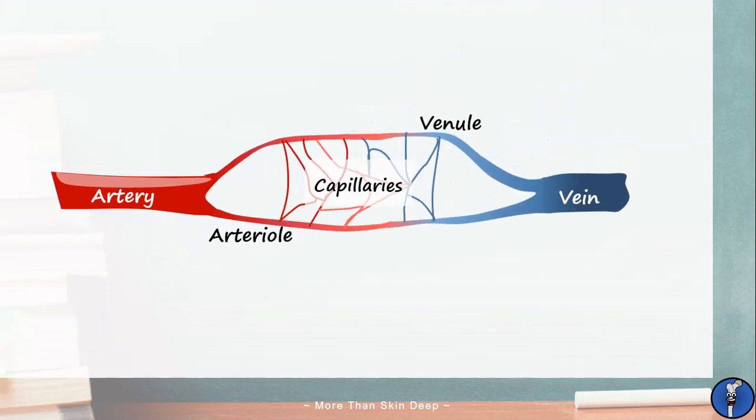These arteries, arterioles, capillaries, veins and venules all have very specific structures which make them good at their jobs. Let's take a closer look at these now.